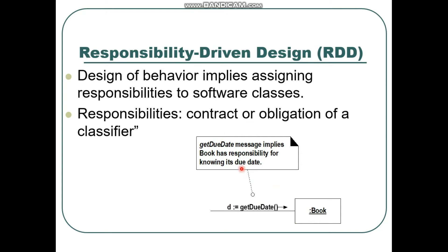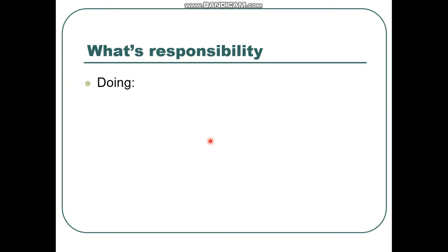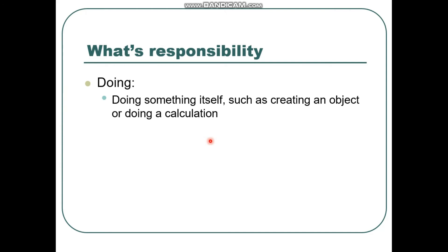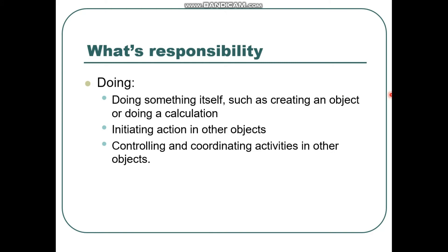What is responsibility? There are two types of responsibility. The first is known as 'doing.' In doing: doing something itself such as creating an object or doing a calculation. This means you are doing something. The first sub-type is doing the action yourself, and the second is initiating action in other objects.